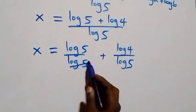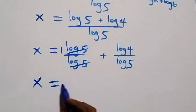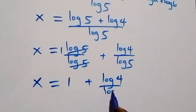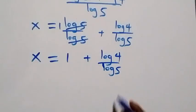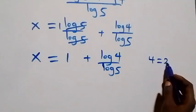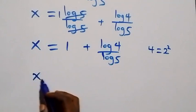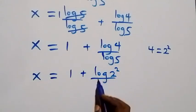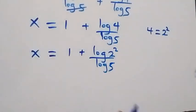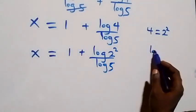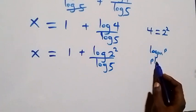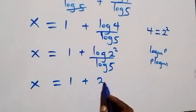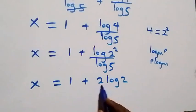Log 5 over log 5 cancels to give 1, so we have x equals 1 plus log 4 over log 5. We can also express 4 as 2 times 2, which is 2 squared. So what we have becomes x equals 1 plus log(2 squared) over log 5. Applying the power rule of logarithms, this becomes x equals 1 plus 2 log 2 over log 5.